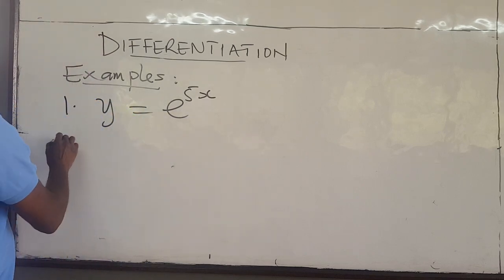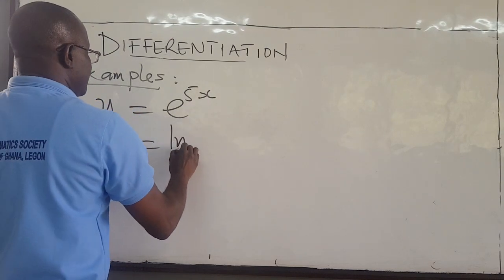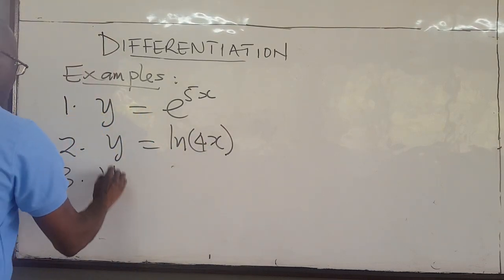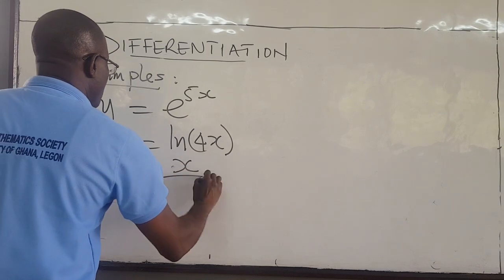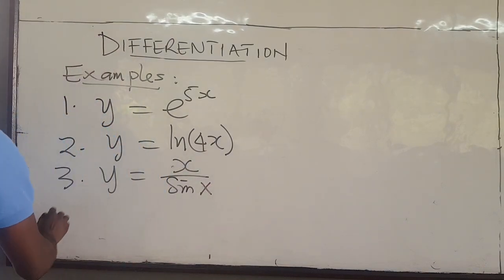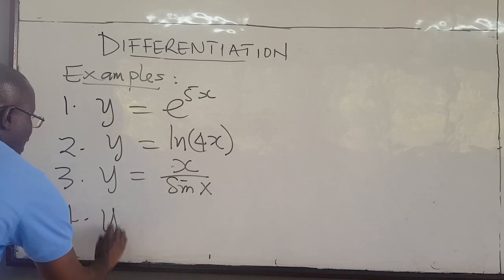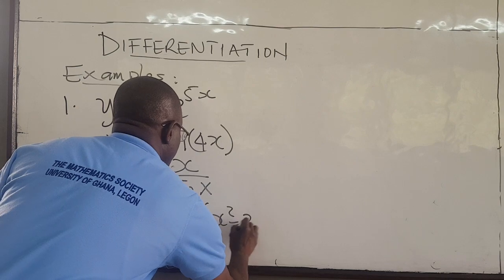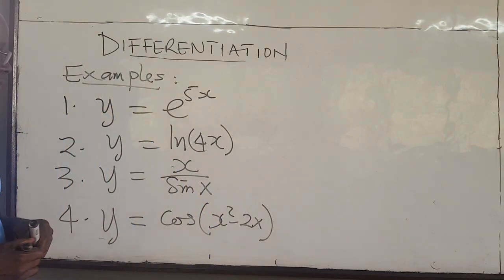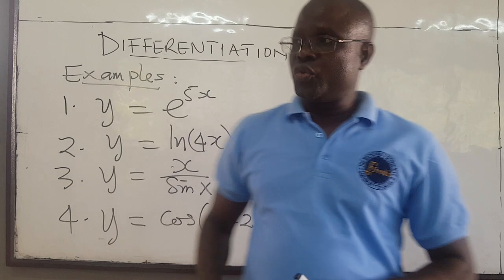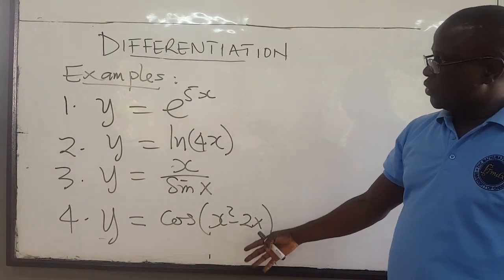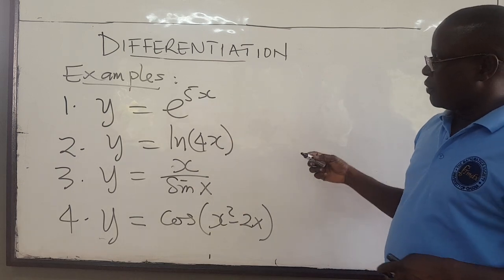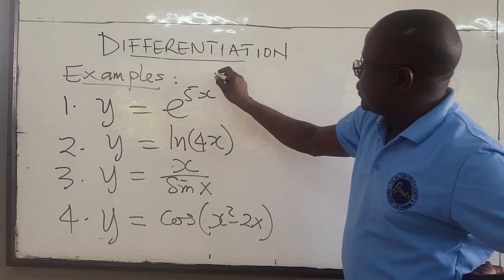How do you find the derivative of that? Also, y equals ln(4x) — how do you find the derivative of that? y equals x over sine x, and finally y equals cosine of x squared minus 2x. We are going to use the chain rule, and based on the basic derivatives, we can find the solution.